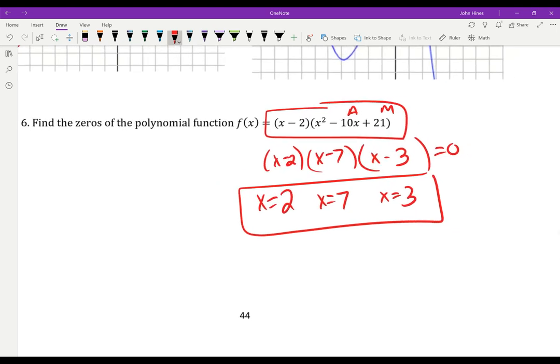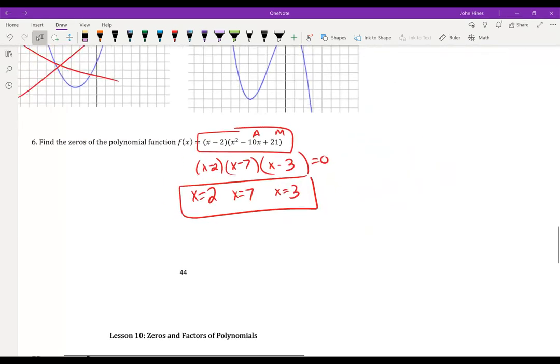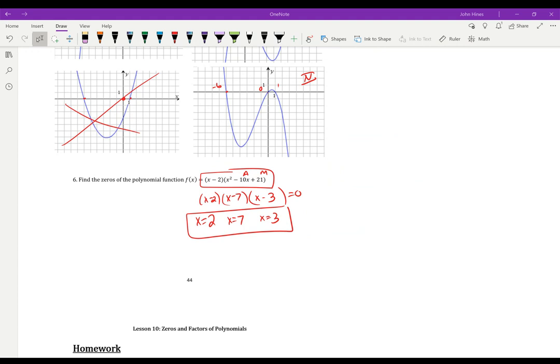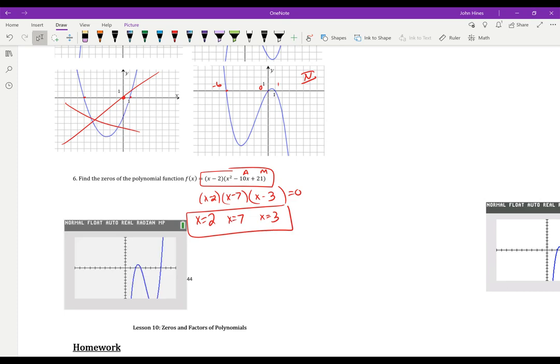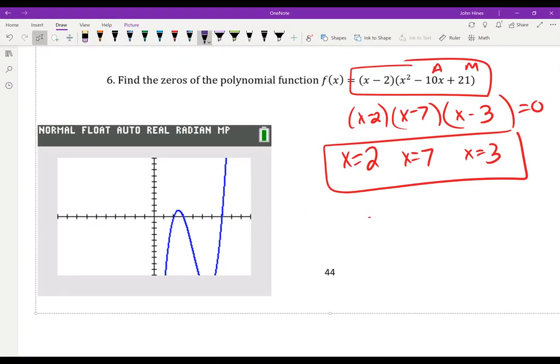But watch this, guys. I can just type this into my calculator. I can just type this into my calculator. I don't know if I have my calculator up. So I'm going to copy it over. So I'm going to go to y equals and type in x minus 2, parentheses, x squared minus 10x plus 21. And if I graph it, let me drag this over because I don't think my calculator is sharing with you guys right now. There we go. So I graphed that function. I didn't do any work. All I did was I typed into y equals. I'm all about doing less work, guys.